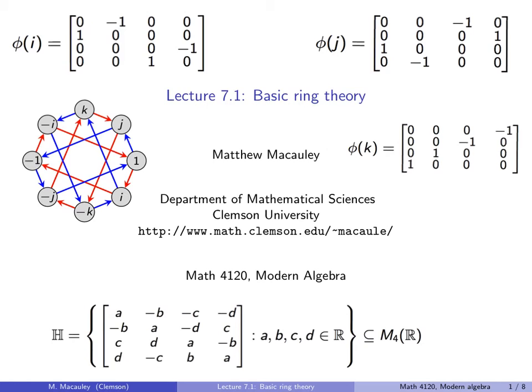Welcome to lecture 7.1, Basic Ring Theory. Abstract, or modern algebra, is the study of algebraic structures. The first such structure that one usually encounters is that of a group, which is a set with a binary operation and a few mild requirements.